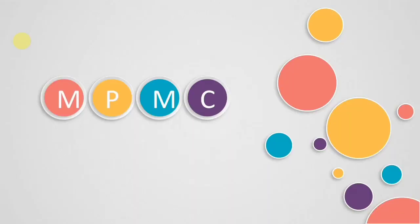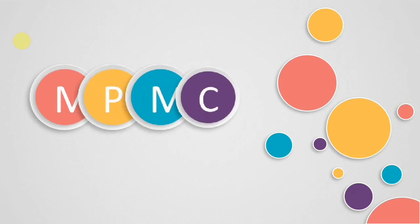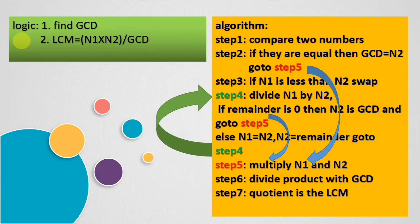Hi, welcome to another session of MPMC lab programs. Today's program is finding LCM using 8086. LCM can be found using the following logic: first we need to find the GCD, that is greatest common divisor or greatest common factor. Then by using GCD you can find the LCM — the logic is multiply the two numbers and divide with GCD, that will give you LCM.